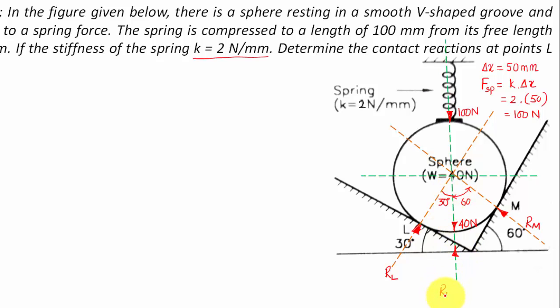So R_L cos 30 and its horizontal component will be somewhere along this direction, R_L sin 30. That's it. Now comes the turn of R_M. So R_M will have a vertical component again in the upper direction, this is going to be R_M cos 60.